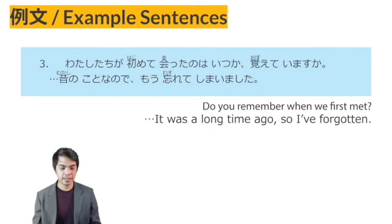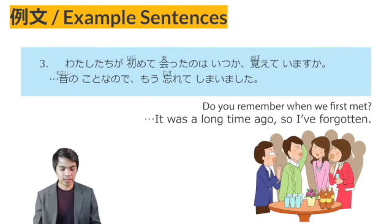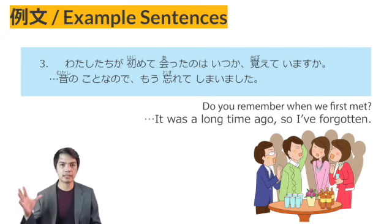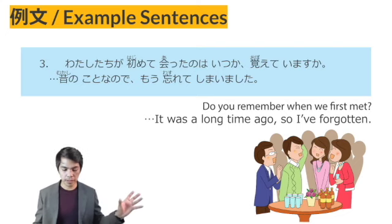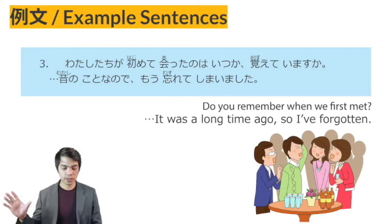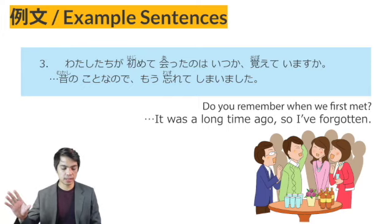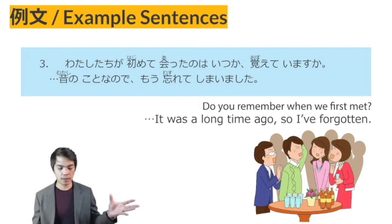Example sentence number 3: Watashitachi ga hajimete atta no wa itsu ka, oboite imasu ka? Mukashi no koto na no de mou wasurete shimaimashita. The phrase ATTA NO WA ITSU KA uses the interrogative ITSU plus KA. OBOITE IMASU KA — do you still remember when we first met? The next sentence: Mukashi no koto na no de — because it's a thing of the past — mou wasurete shimaimashita — I already forgot.